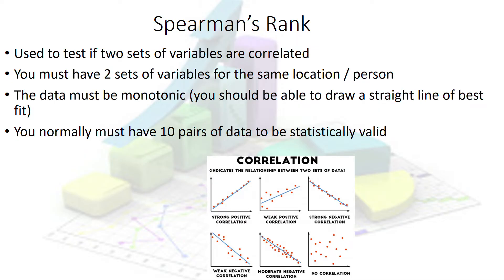The first test is Spearman's Rank — sometimes called Spearman's rho or Spearman's correlation. Basically, you've plotted some data and you're looking at whether you have a positive or negative correlation and how strong it is. It provides two things: the direction and the strength of the correlation. To use it you need two sets of variables that must come from the same location or person — for example, GDP and life expectancy for the same country.